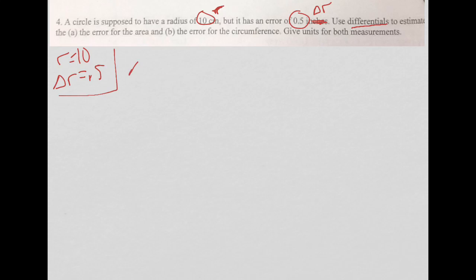So I start with an area equation. Area of a circle is pi R squared. Now, when I'm doing differentials, it's not like related rates where I derive with respect to T. It's a little bit easier. I do the derivative with respect to that R over there.